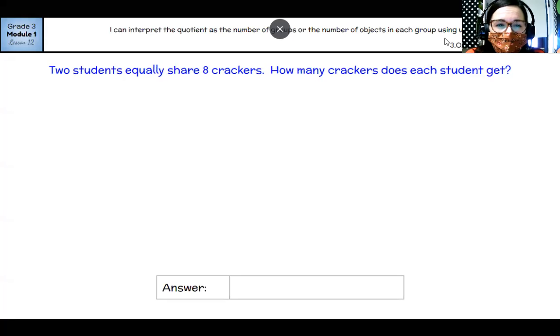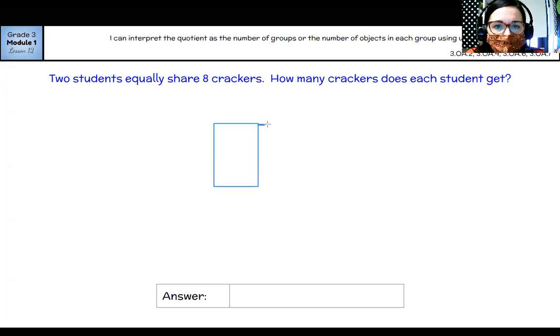Okay. So two students equally share eight crackers. How many crackers does each student get? Okay. So if I make a tape diagram, I know that there are two students and they're going to share eight crackers. So one, two,